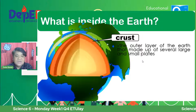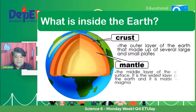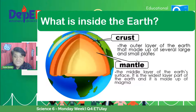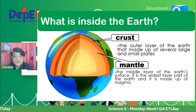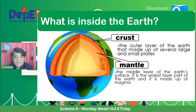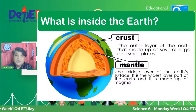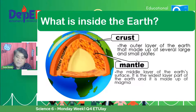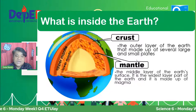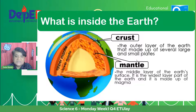Lalim pa tayo, tingnan natin ang malalim pang part ng ating Earth. We have here the mantle. When we say mantle, this is the middle layer of the Earth's surface. It is the widest layer part of the Earth, and it is made up of magma. Nandyan na yung magma sa part na yan ng Earth. There are two parts: the upper mantle and the lower mantle. Ito yung pinakamakapal sa pagitan ng crust at sa pinakacenter ng Earth.